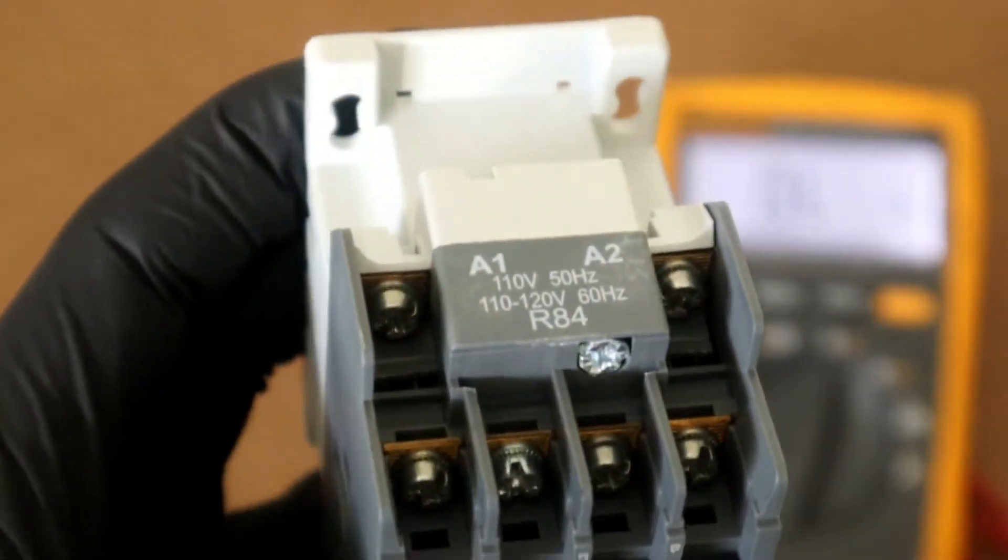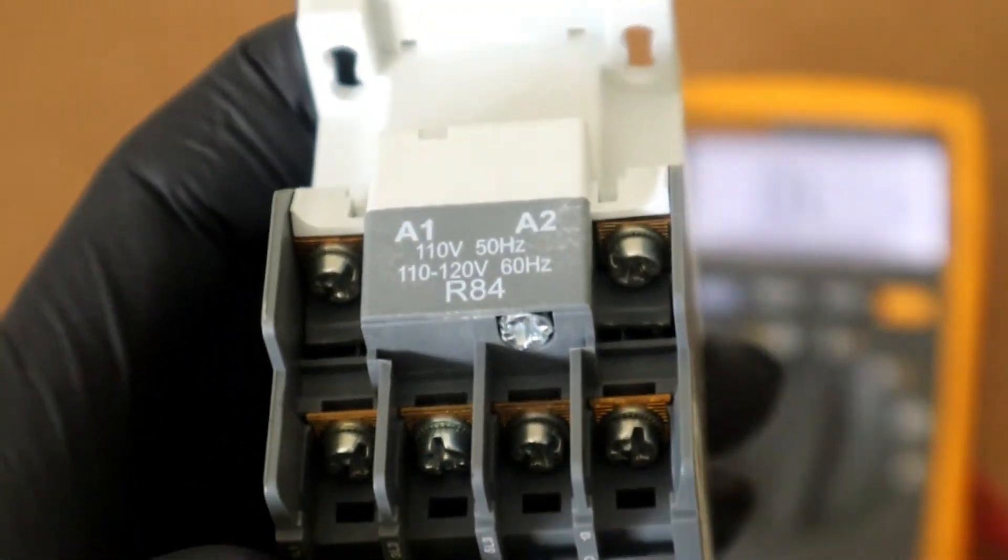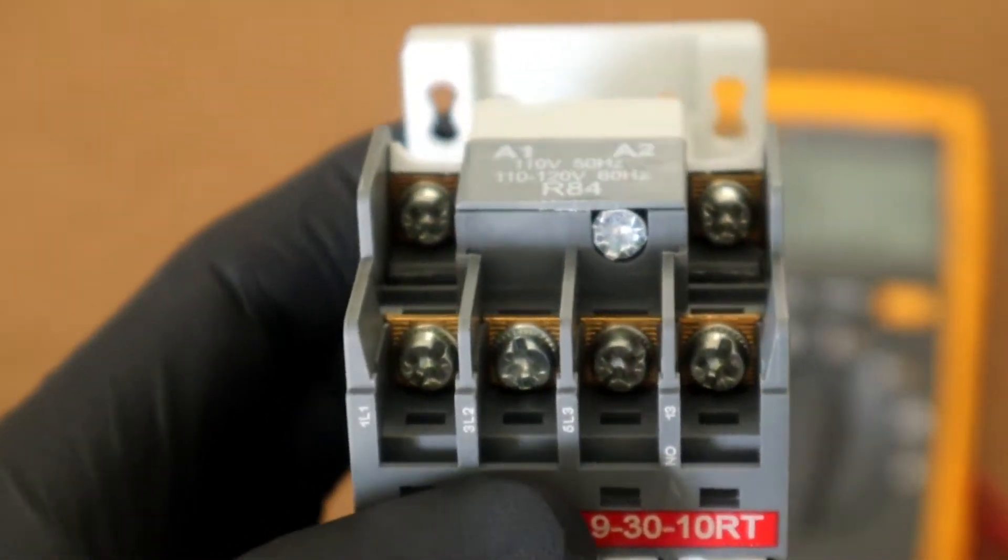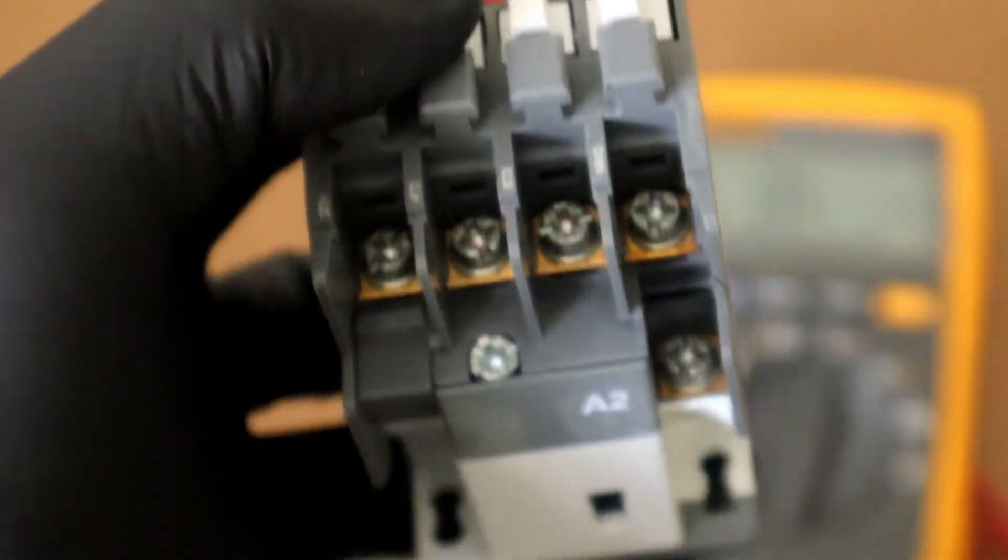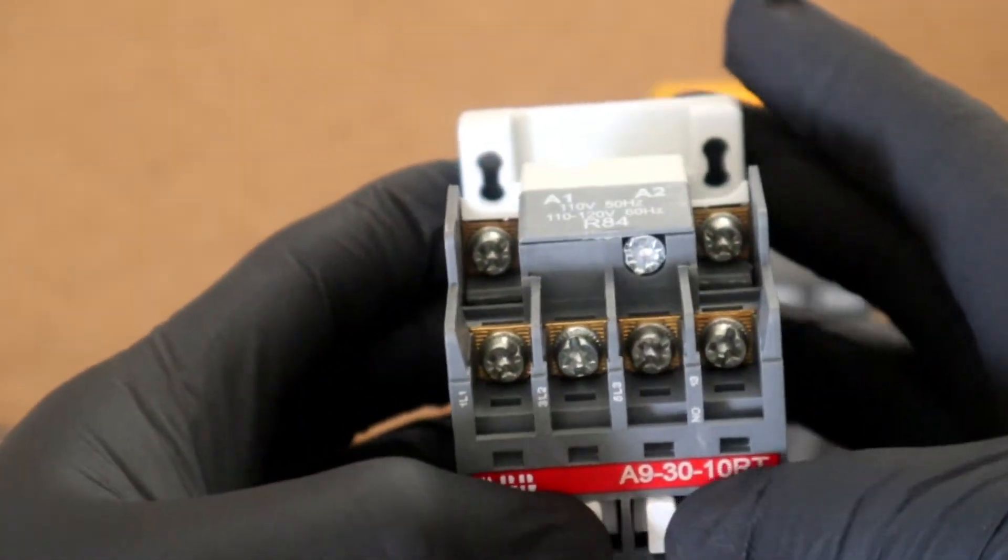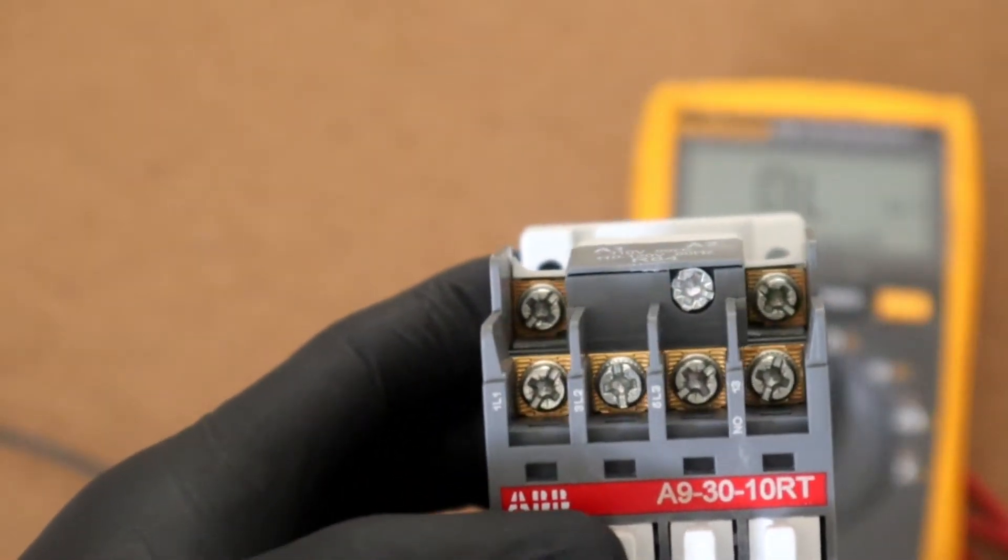How do we test the coil of a contactor? We can test it with a voltage across it, as well as in the de-energized form. Since we just have our contactor isolated, we'll test it in the de-energized form.